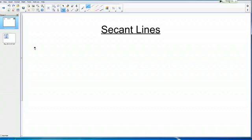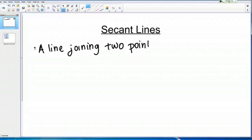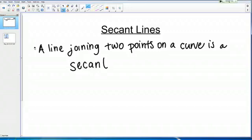A secant line is just a line joining two points on a curve. It's pretty simple really. A line joining two points on a curve is a secant line.